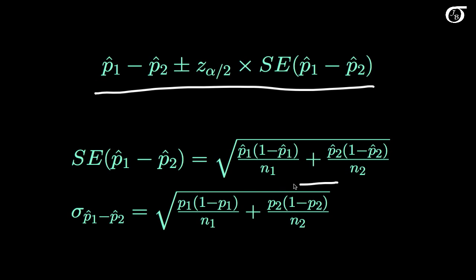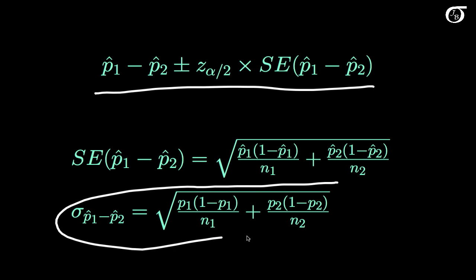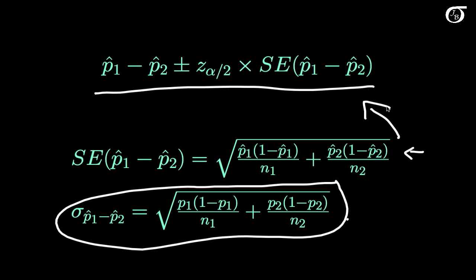The true standard deviation of the difference in sample proportions is what we'd ideally use in the formula, but we don't know p₁ and p₂ — those are unknown population parameters. So we simply replace those parameter values with the sample values, and we call that our standard error. This standard error of the difference in sample proportions is what goes into our confidence interval formula.